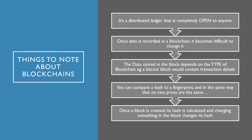The data stored in a block depends on the type of blockchain. For example, a Bitcoin block will contain transaction details of Bitcoin transactions. You can compare hashes to a fingerprint — in the same way that no two fingerprints are the same, every hash is unique, so it's also very easy to track every transaction. Once a block is created its hash is calculated, and changing something in that block will also change the hash.